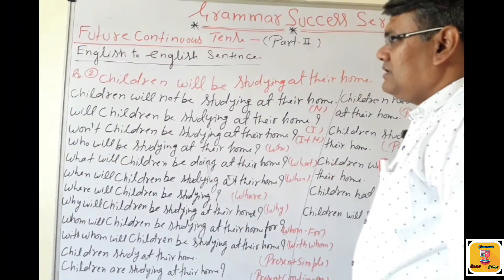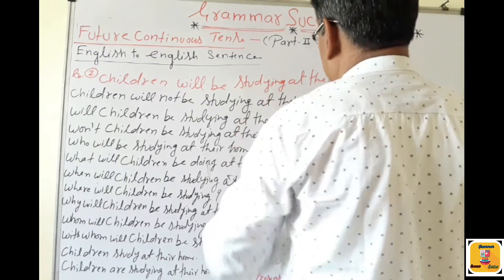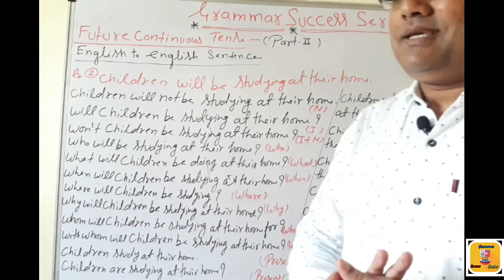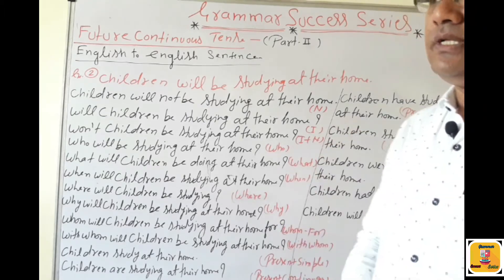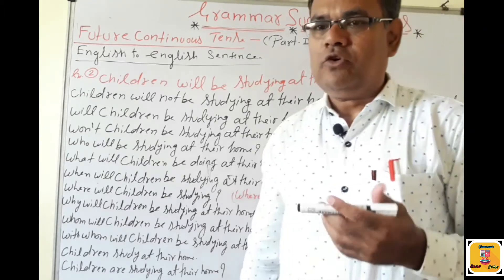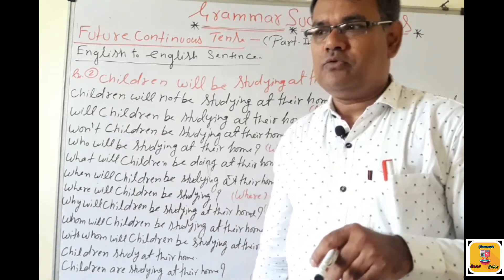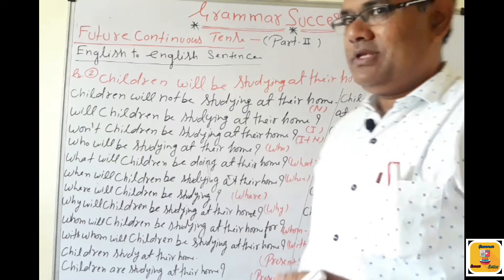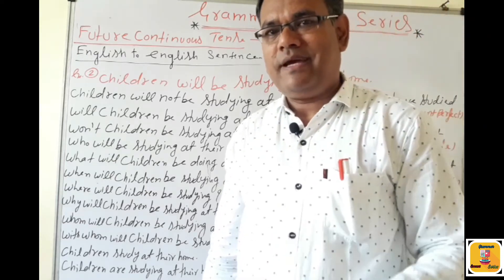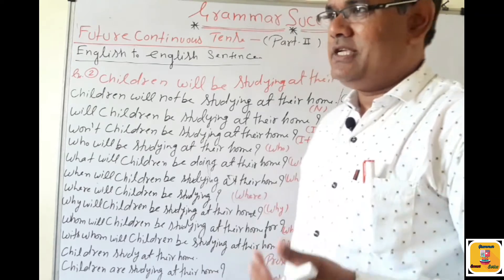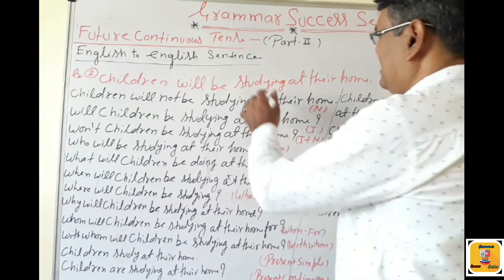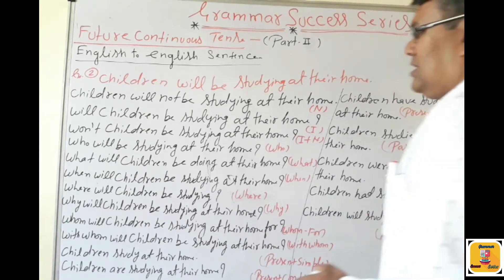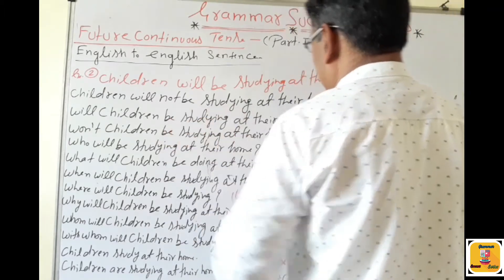Next example: 'Children will be studying at their home.' This year is a very difficult situation — children want to go to their school, but because of the problem of disease COVID-19, they are living at their home and study is online. So this sentence is also Future Continuous. Negative: 'Children will not be studying at their home.'